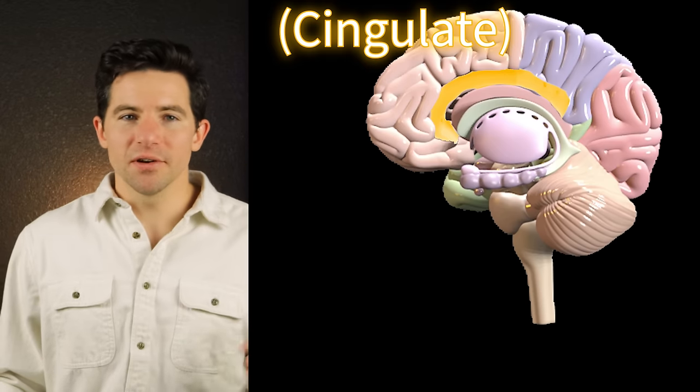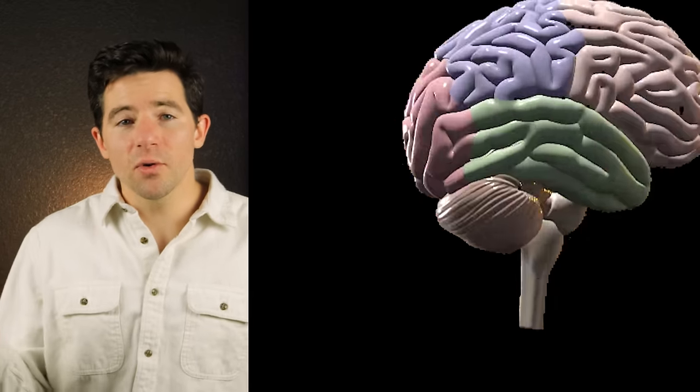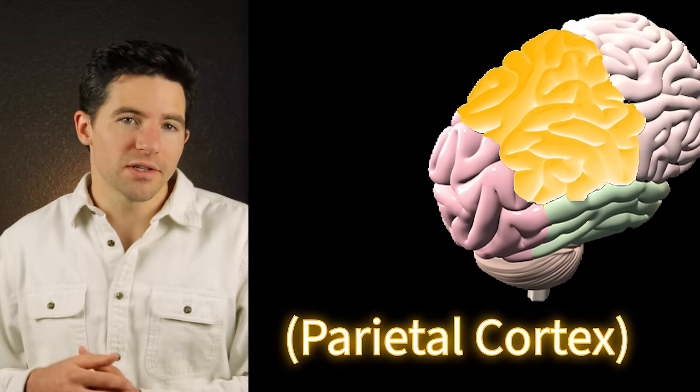That's because no brain area acts alone. When it comes to planning and reasoning, the dorsolateral prefrontal cortex is working with areas deep in the brain like the anterior cingulate, striatum, and hippocampus, as well as other cortical areas like the parietal cortex. So this means that for the brain to do anything, there has to be efficient communication across the various regions.